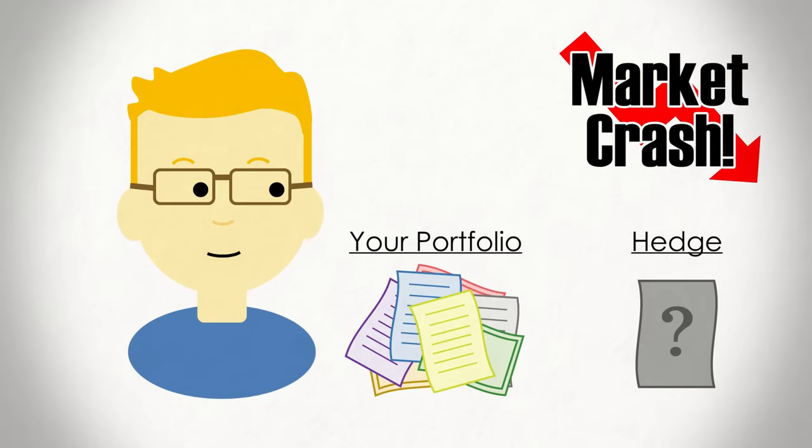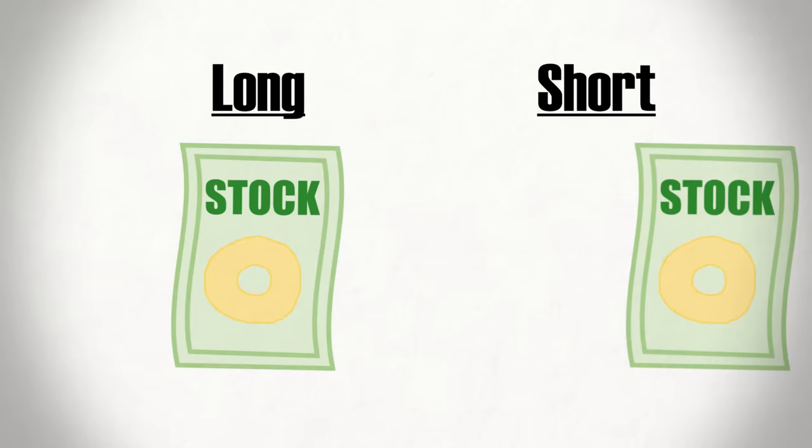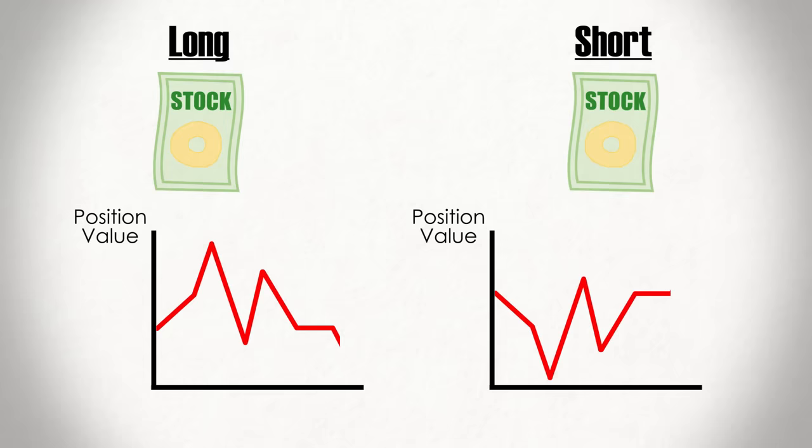As an oversimplified example, an investor could hedge their exposure to a specific stock by shorting that same position. By doing this, they offset their downside. If the stock falls in value, the short position will increase in value, offsetting the decline. Now, investors rarely seek perfect hedges like this. After all, while you've avoided any downside, you've also prevented yourself from achieving any gains. Not the smartest move.